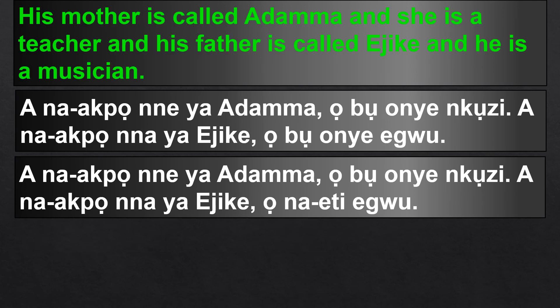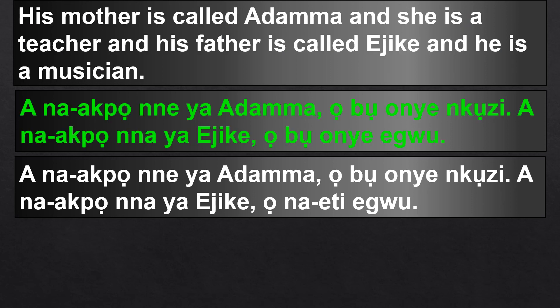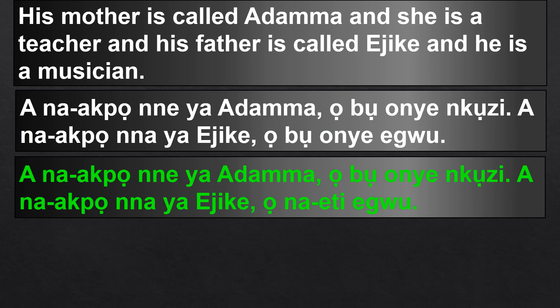His mother is called Adamma and she is a teacher: nne ya Adamma, o bu onye nkuzi. His father is called Edike and he is a musician: nna ya Edike, o bu onye ego. Obo onye ego could mean 'he is a musician' or 'he loves music,' so to be specific and avoid misunderstanding, you say ona eti ego, which clearly means he is a musician.